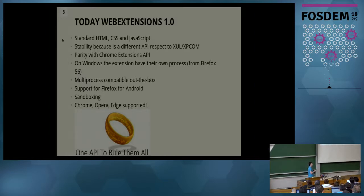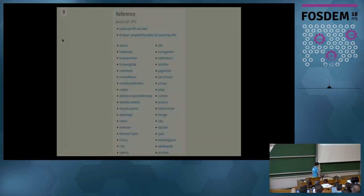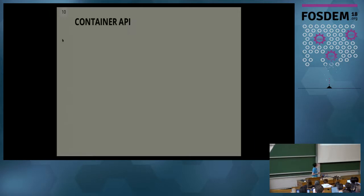We have support on Firefox for Android. Firefox for Android is the only browser on mobile that supports extensions — so you can have uBlock Origin on your Firefox, as an example. Today, we have all this stuff. And this is a screenshot of the documentation showing all the APIs that are now available — a lot of things.